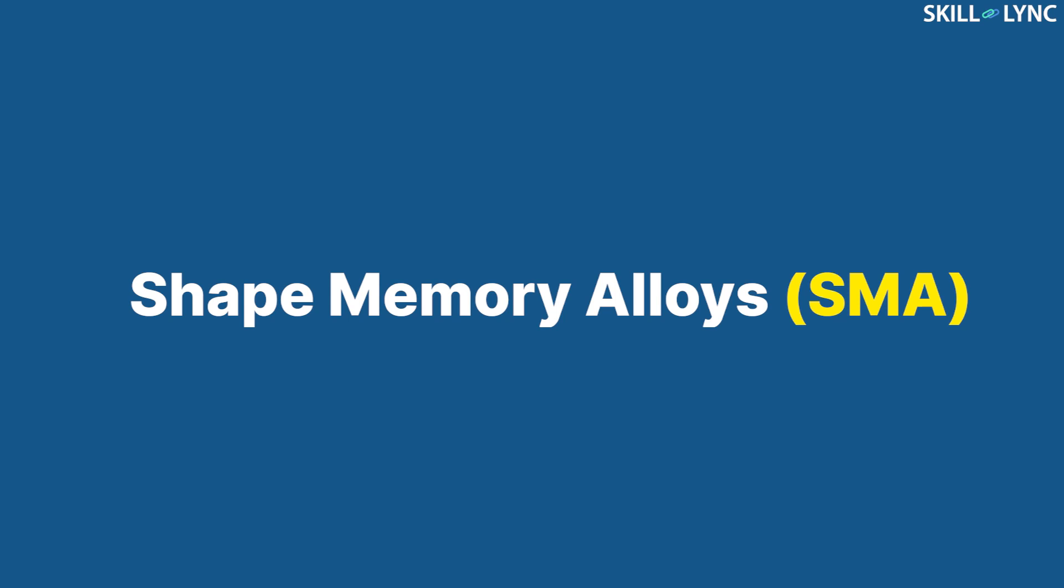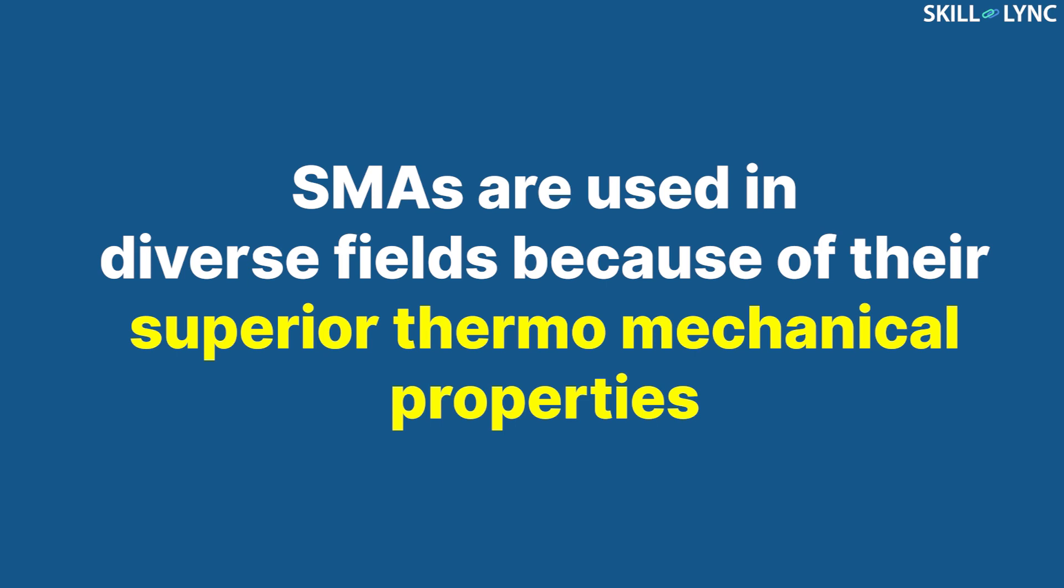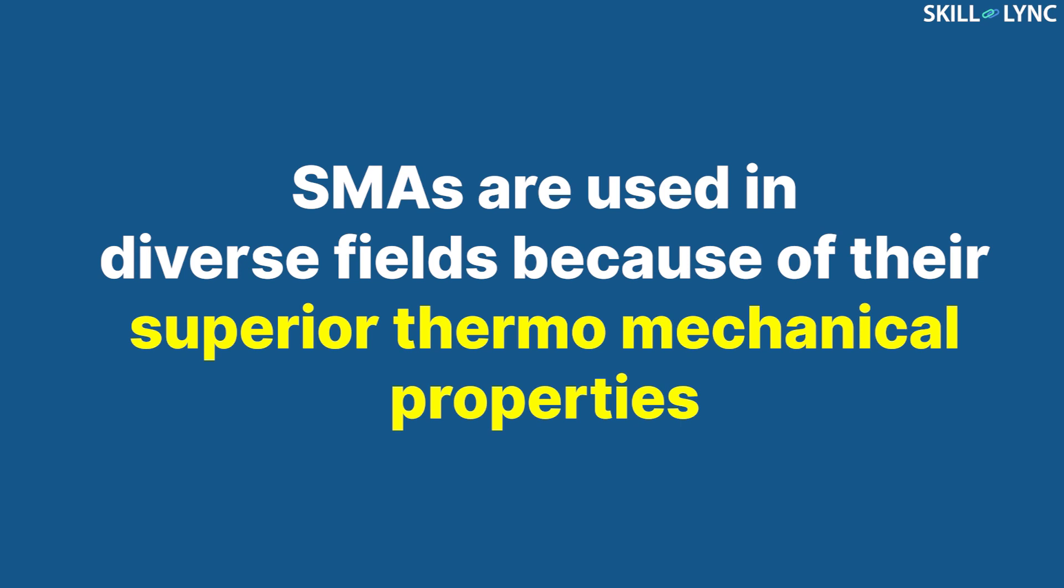We are going to discuss certain materials called shape memory alloys that can remember their shape. The specific nature of shape memory alloys is due to the inherent behavior of the materials. Shape memory alloys are used for diverse fields of applications for their superior thermomechanical properties. The most commonly used shape memory alloys are copper-zinc-aluminum and copper-zinc-nickel.